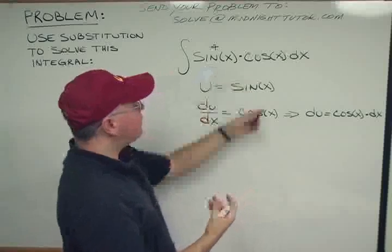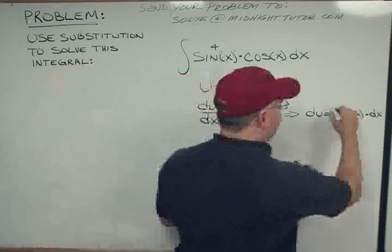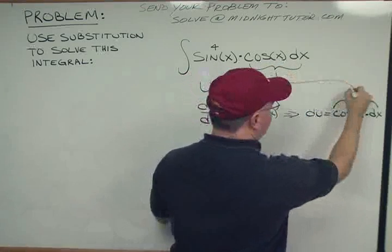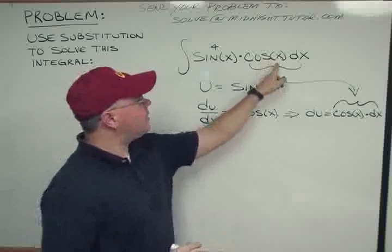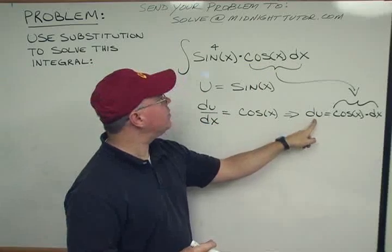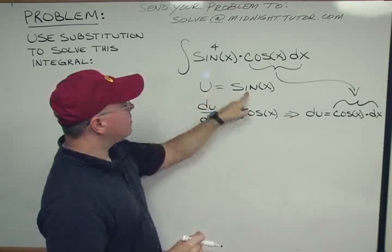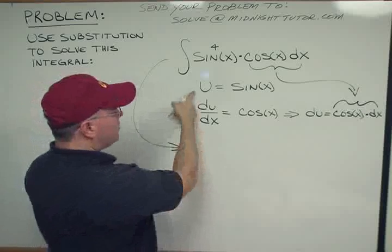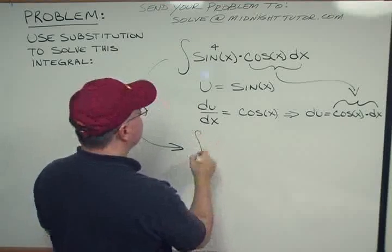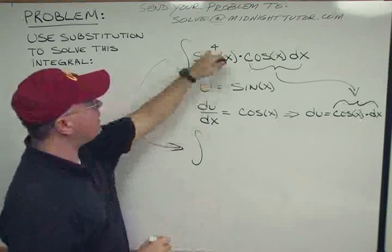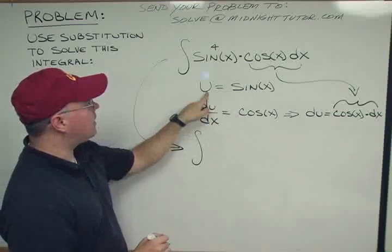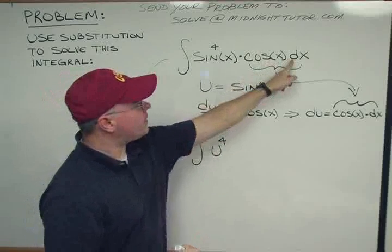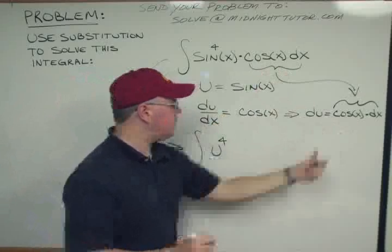If I look at this carefully, a lot of these things fall into place. I've got this right here, and that matches right here. So I've got a cosine x dx term, and that's equal to du. We've said that u is equal to the sine of x. So I can rewrite this integral in terms of u: I have the integral of sine x to the fourth — but if u is sine x, then this would be u to the fourth times cosine of x dx, and that cosine x dx term is equal to du.